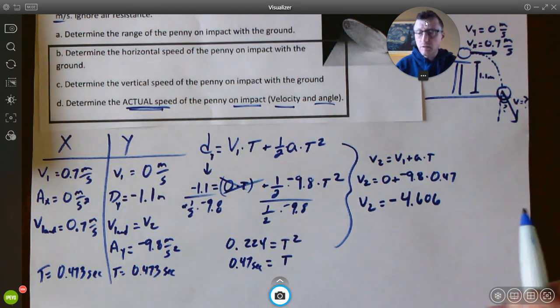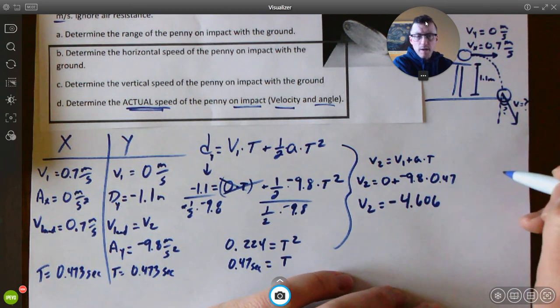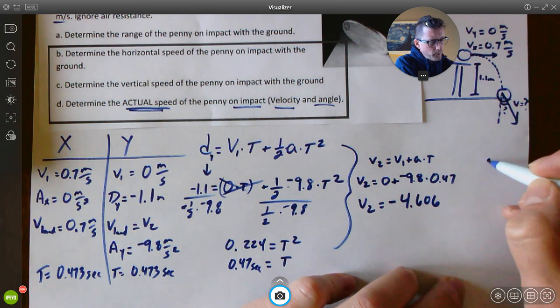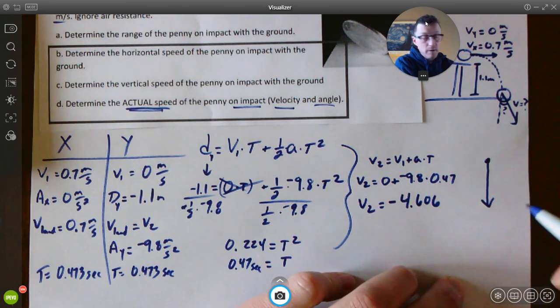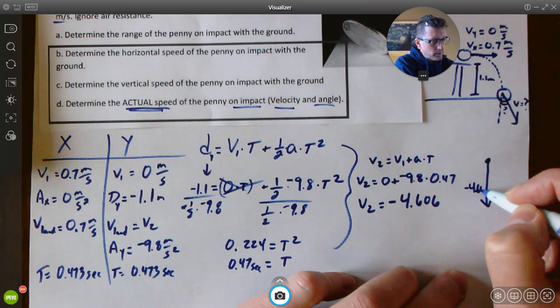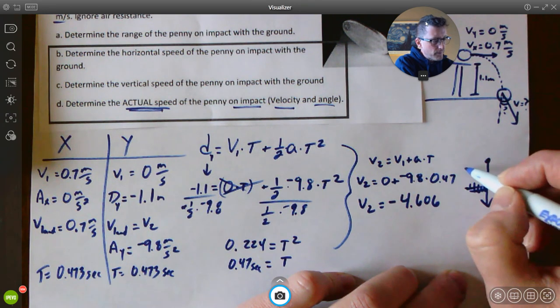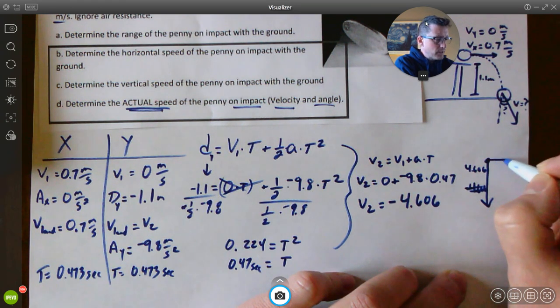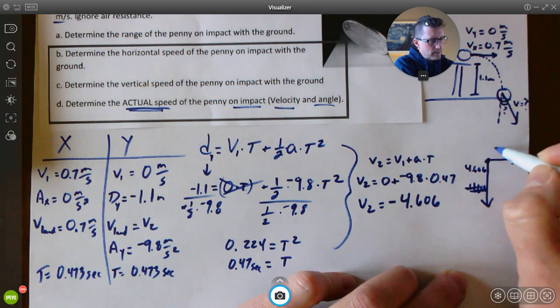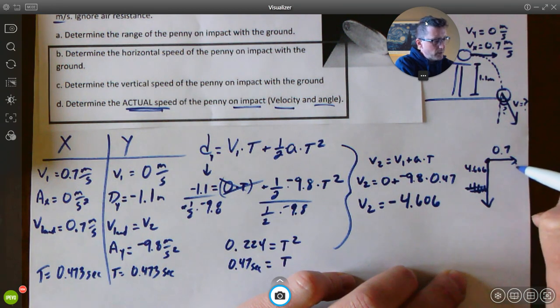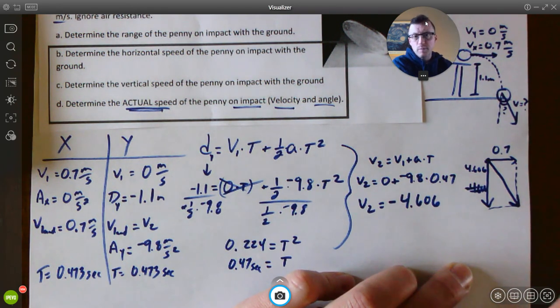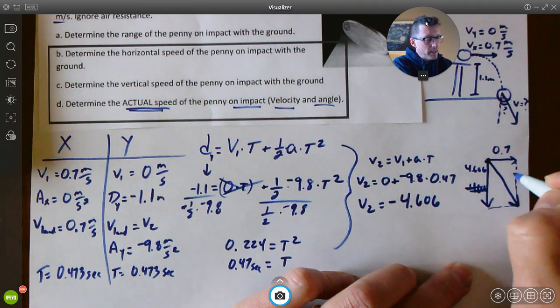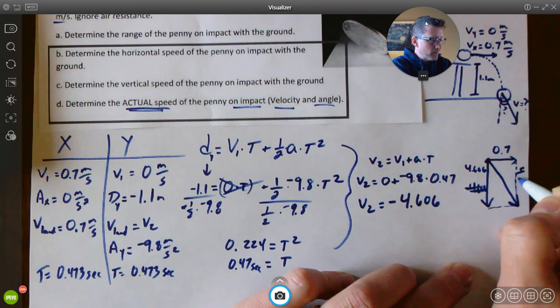So now we've got to do a little bit of trigonometry, a little bit of Sohcahtoa stuff. We're going to make a triangle here. We know if this was our marble, we now know that the up and down direction of the velocity is down. We know its length, negative 4.606, or we'll just say positive 4.606. Then we know the X portion of that is 0.7. Well, if you kind of made a triangle, we then would say, okay, where that comes together is the actual speed and the actual angle of our penny. And the lengths of those sides are the speeds that we calculated.